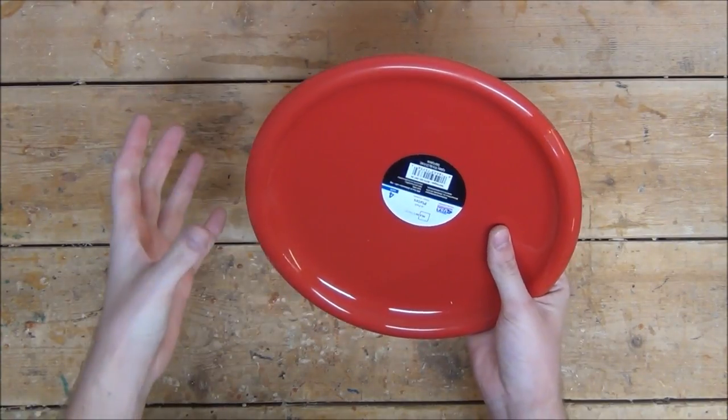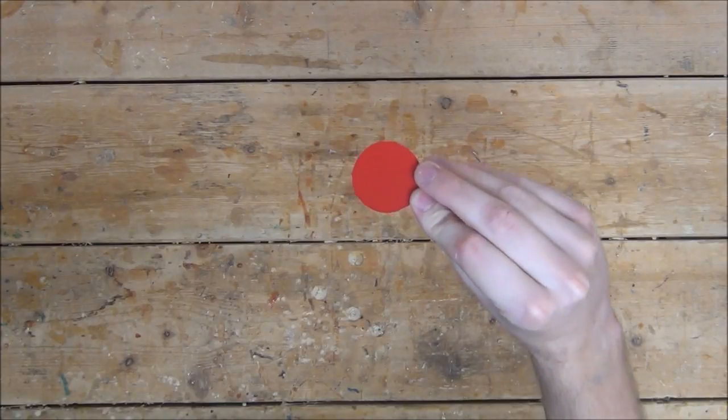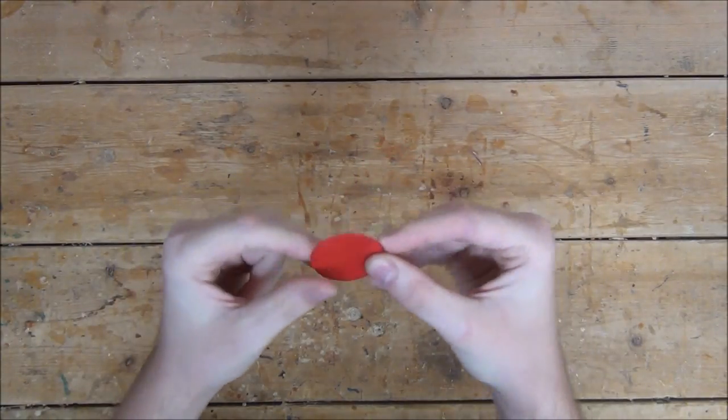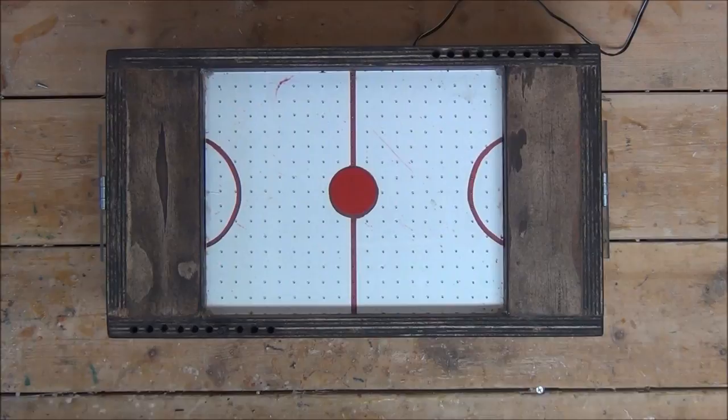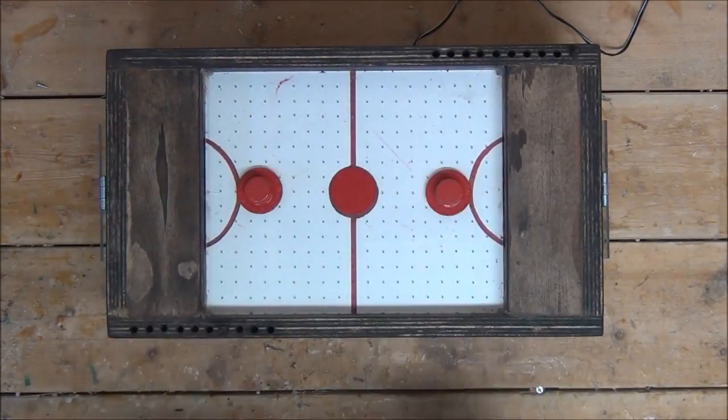For the actual puck itself, all I'm going to do is take this thin red plastic plate that I picked up at Walmart. Four for a dollar. And cut a poker chip-sized piece out of the center of it. Just like this. This is both incredibly durable and very thin, which means it'll hover well. With that, everything is complete and it is now finally time to test it.